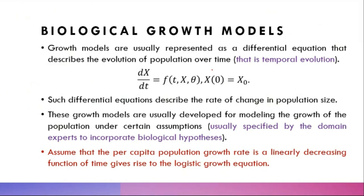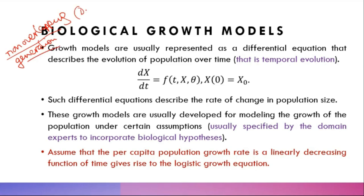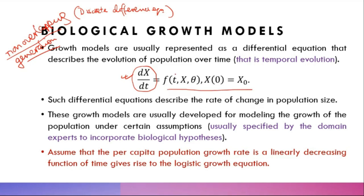Growth models are mostly represented as differential equations. In mathematical biology, if we have a non-overlapping generation, we use discrete difference equations. For an overlapping generation population, we use differential equations that model the rate of change in population size as a function of time. The general form includes a time component, a size component, and parameters that are usually unknown quantities.